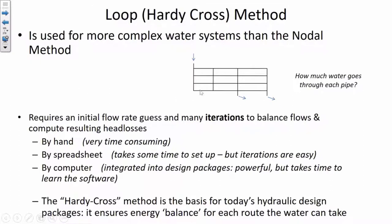It requires an initial guess to kick things off and then lots of iterations to find the final answer. You can do it by hand, but it's really time consuming — we're going to skip right into spreadsheets. The Hardy-Cross method is what the WaterGEMS program is based on, and you'll use WaterGEMS a lot for our design project. So it's important to understand how WaterGEMS is working and what calculations it's considering in the background. The way it works is it does an energy balance for all of the different routes — like when skiing, it doesn't matter which route you take, the energy change is the same. The head loss has to be the same through each path from inlet to outlet.